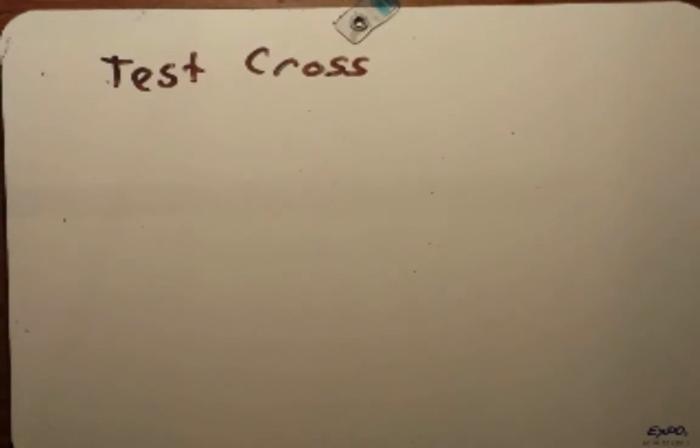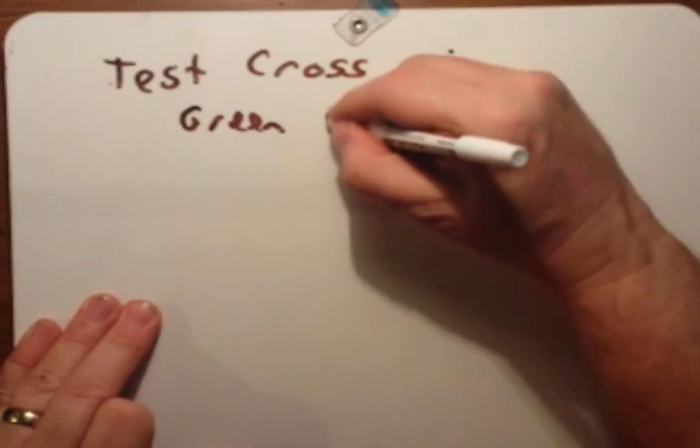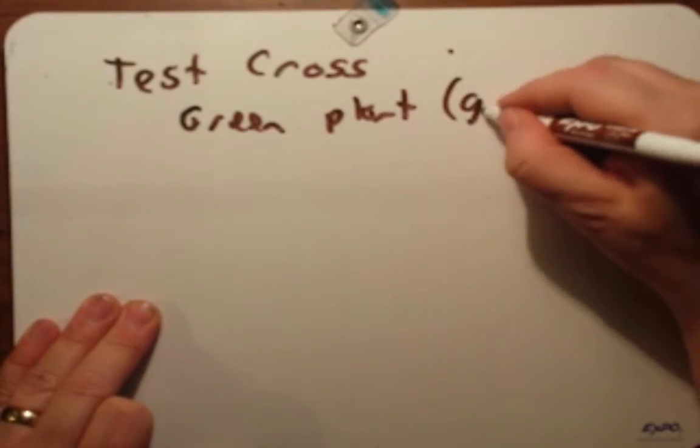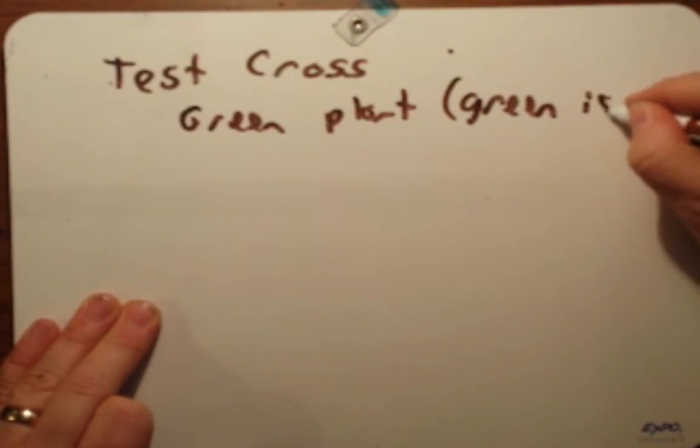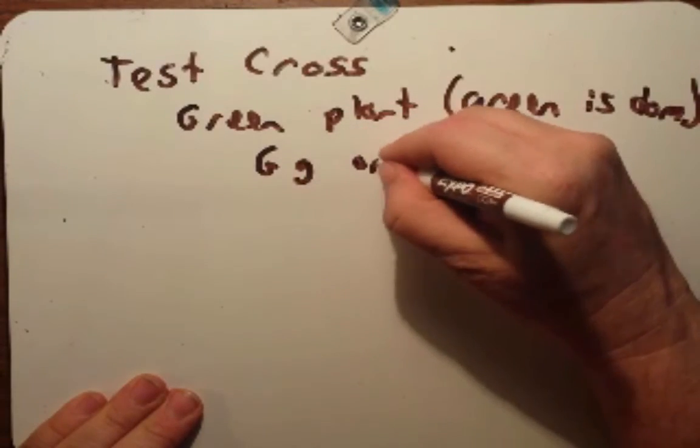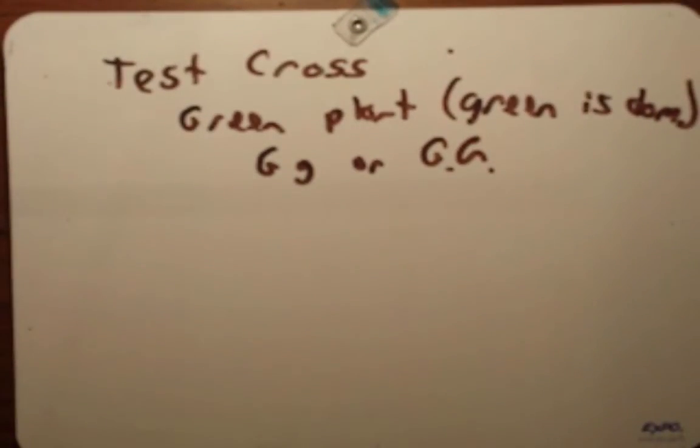Now we want to talk about something called a test cross. Let's say you're given a green plant. You know from various other studies that green is dominant. But we don't know if this green plant is big G little g or if it's big G big G. We don't know what it is, but we want to find out. And the way we find out is by doing a test cross.